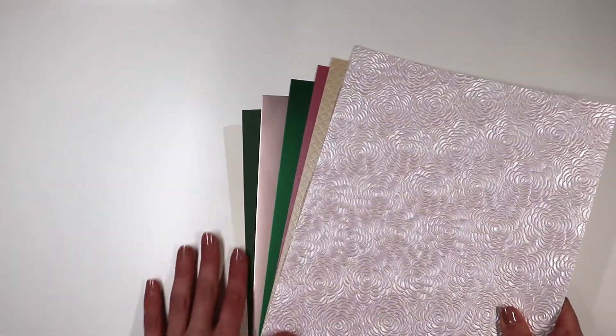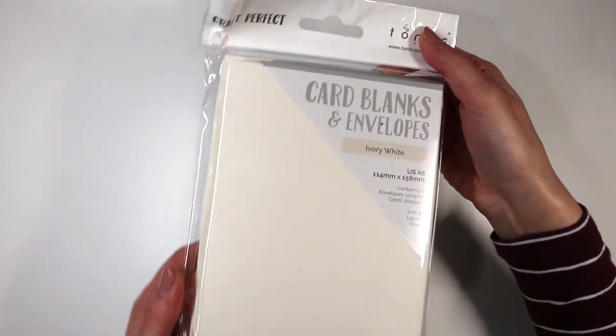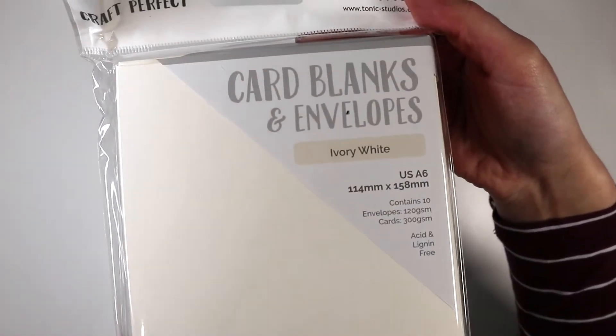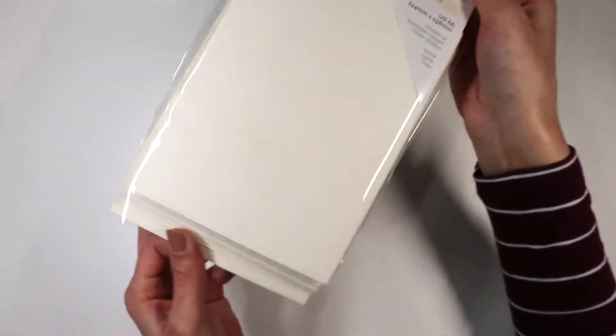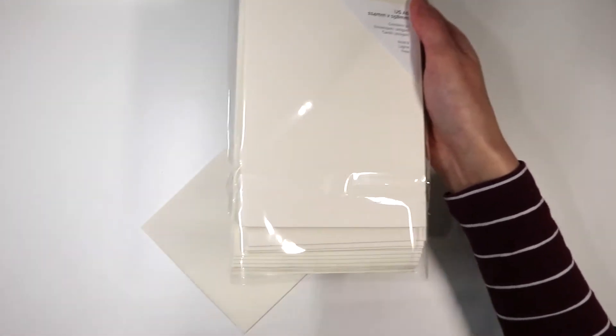In this kit we are provided with a pack of 10 ivory card bases and envelopes. I don't use this size. For some cards I will cut this card base in order to obtain the format I use, which is 4 and a quarter by 5 and a half, standard size.